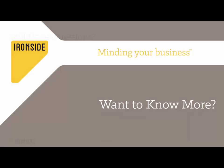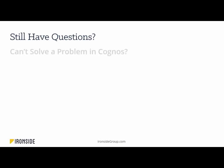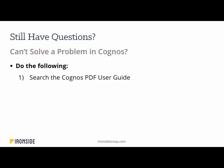Do you want to know more? Still have questions? Can't solve a problem in Cognos? We suggest you search the excellent Cognos PDF User Guide — there's lots of useful information in that guide. Second, ask your coworkers; one of your knowledgeable Cognos coworkers might be able to answer your question. Third, the internet is a rich source of information, both good and bad, but you might try an internet search. But fourth, why not consider taking an Ironside training course?